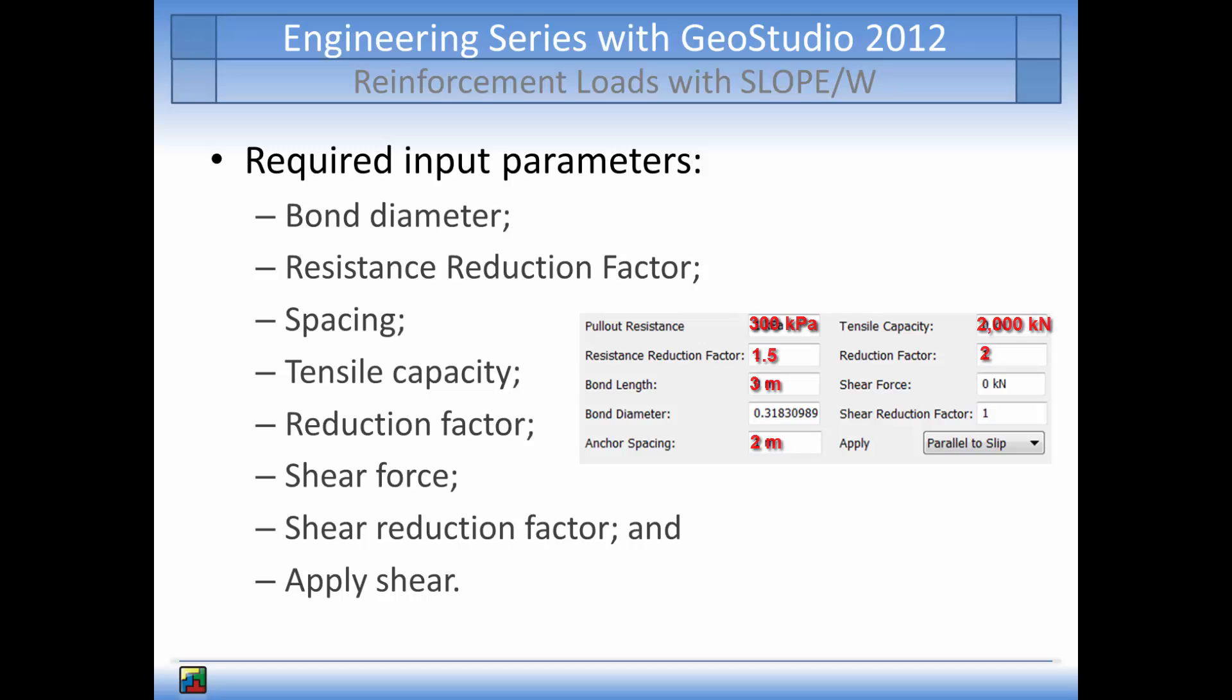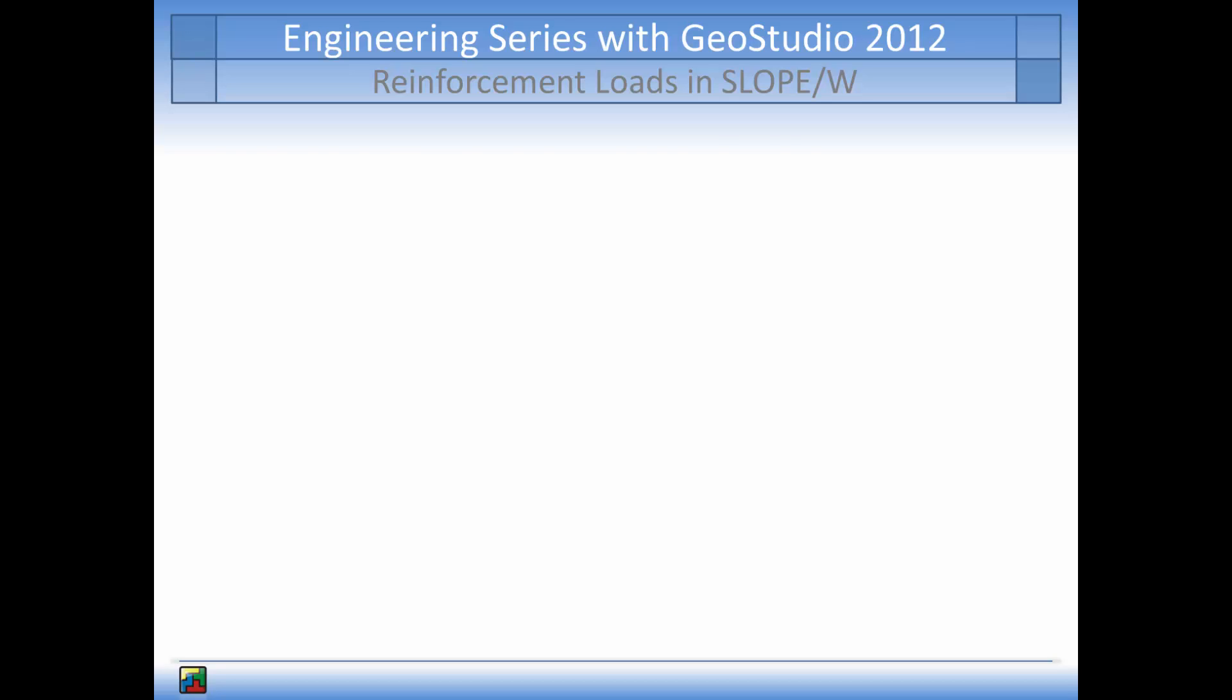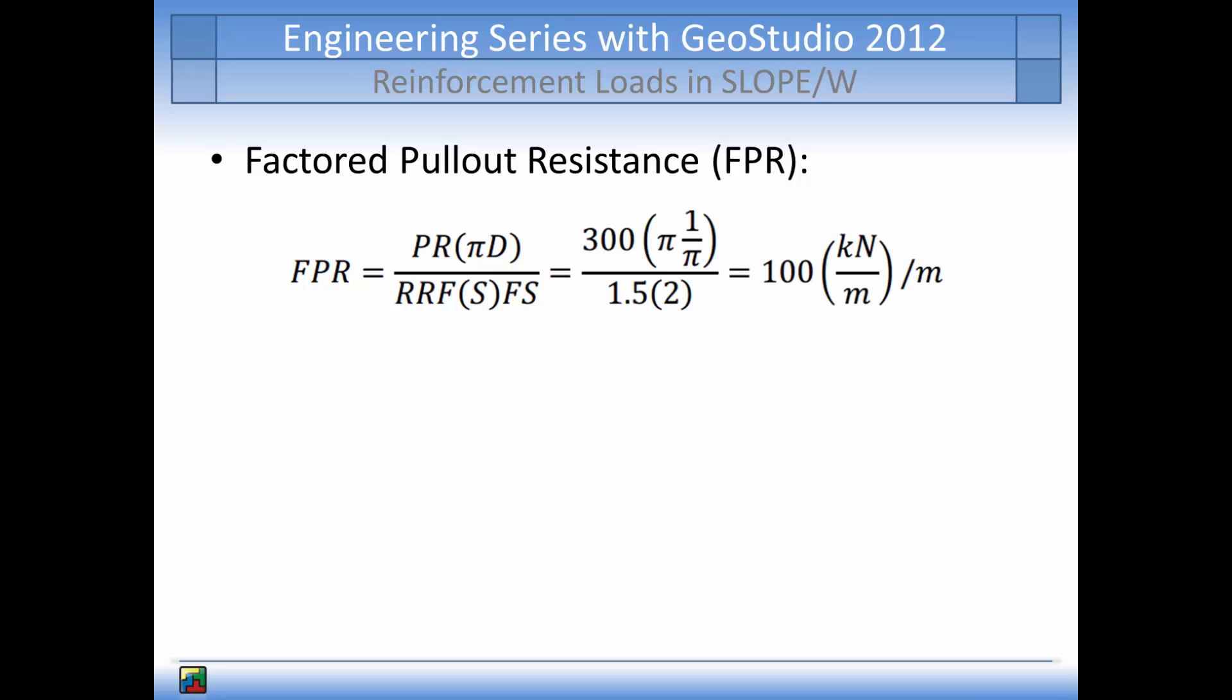Using these values, we can calculate the factored pull-out resistance and factored tensile capacity. First, the factored pull-out resistance per length of grouted section behind the slip surface is calculated by the equation shown. The result is 100 kilonewtons per meter, per meter of grouted section behind the slip surface.